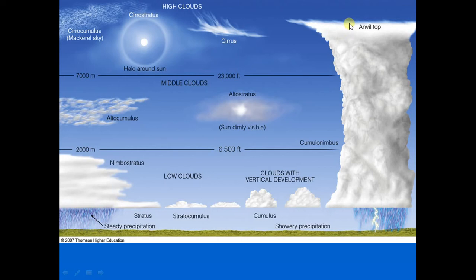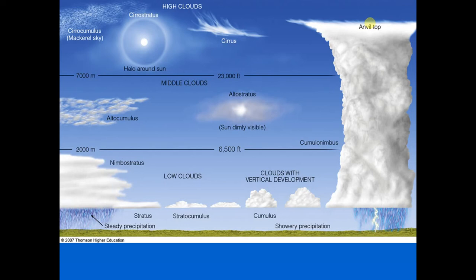Eventually the top of the cumulonimbus gets high enough where winds aloft push it out, and it can no longer rise into the stratosphere because temperature increases with height there, making it stable. The top spreads out and forms an anvil. Notice the fuzzier appearance of the cloud top compared to the puffier lower portions — at the top there are only ice crystals; the cloud is becoming glaciated. There can be very strong updrafts and downdrafts, sometimes 40–60 mph, which can grow larger raindrops and produce baseball-sized hail.